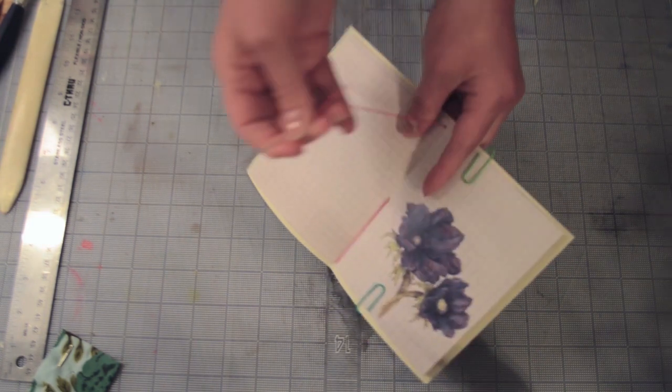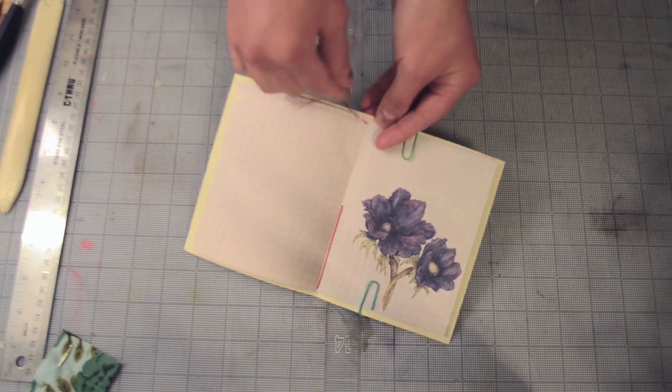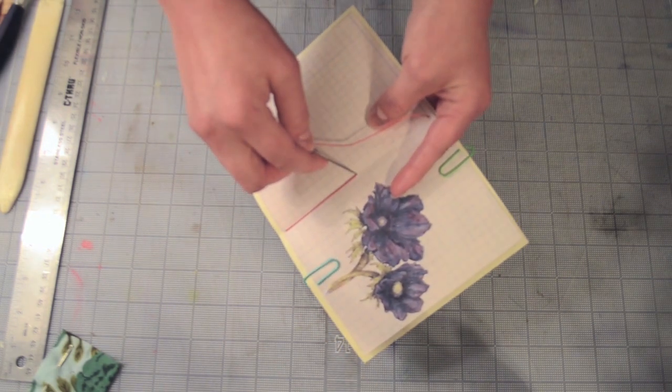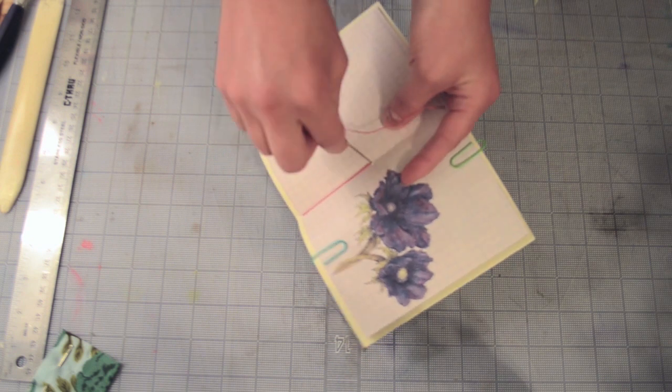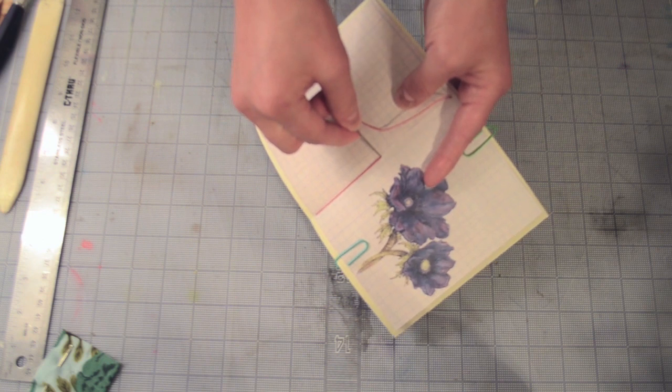Make sure you're keeping your thread pretty taut, but don't pull too hard because you could tear through all of your pages. So last, we're going to put the needle back through the center station. And be careful not to split the thread that's already going through.